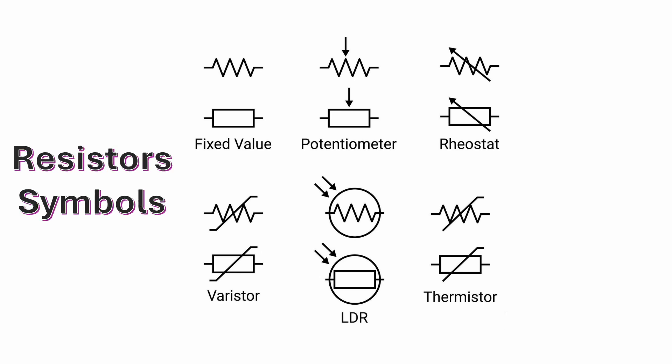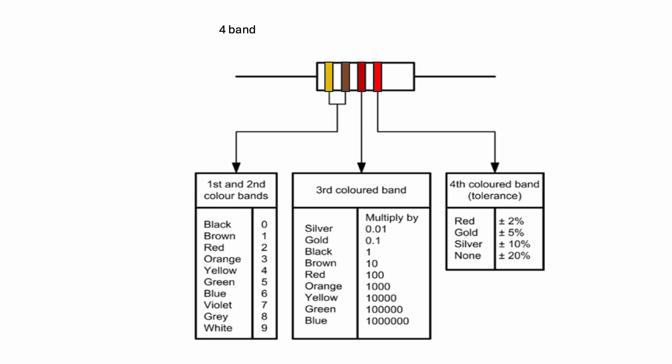Here are the symbols for a resistor. This looks like the American style and this looks like the European style, but both have the same meaning. The resistor is represented by the letter R in mathematical notation. For four-band resistors, the system of finding the value is easily described in this chart.